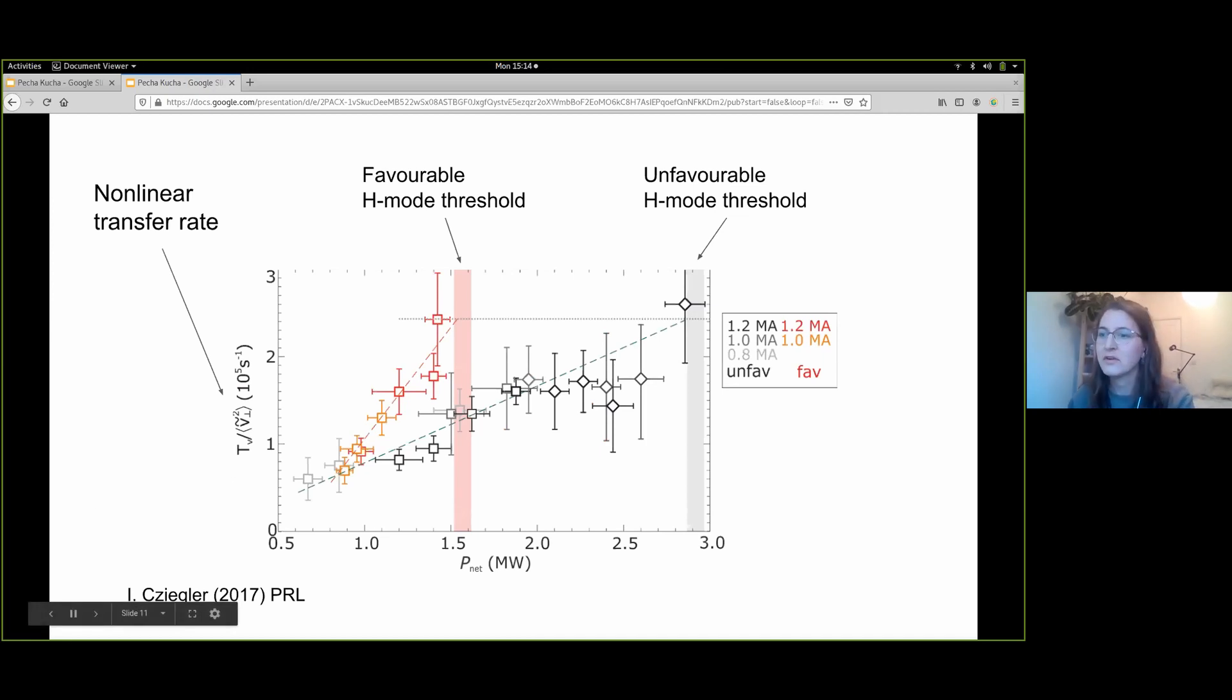The transfer into zonal flows versus net power for these two cases follow different trend lines, but the transition into H-mode occurs at the same transfer rate. The large differences in net power when the transition occurs have led to them being known as favorable and unfavorable geometries.